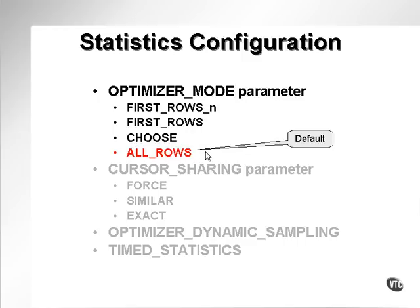So the all rows setting simply implies that your optimizer should assume that it's going to read all rows in the table for every query. And the first rows parameter implies that the optimizer should assume that it's going to read a small number of rows. In other words, it's going to do a lot of exact hits.